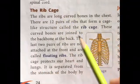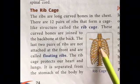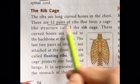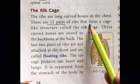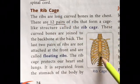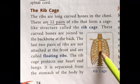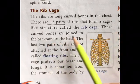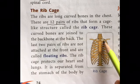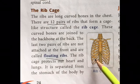Next is the ribcage. It is for protecting our heart and lungs. It consists of 12 pairs of ribs which form a cage, covering the heart and lungs from any damage. These curved bones are joined at the backbone, and the last two pairs are not attached at the front — these are called floating ribs, which are not attached to each other.